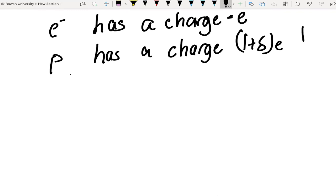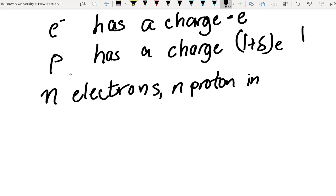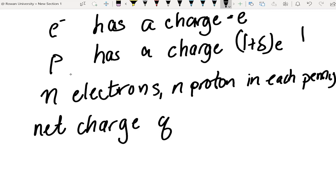So, if we want to get the net charge, well, if we have n electrons and n protons in each penny, then the net charge, q, is therefore n times minus E for the electron, plus n times one plus delta E, for the proton. And that gives us a net charge of n delta E. Now, we just need to figure out how many protons and electrons there are in each penny.